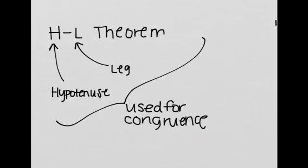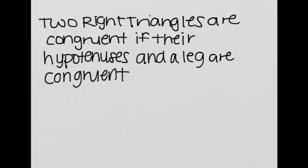It's used for congruence. Basically, it states that two right triangles are congruent if their hypotenuses and a leg are congruent. This is also an if-and-only-if statement, or it could be.